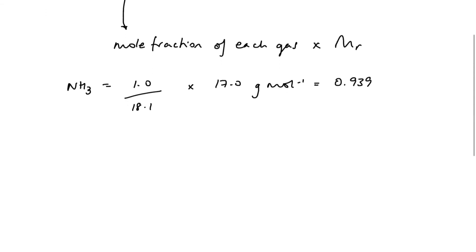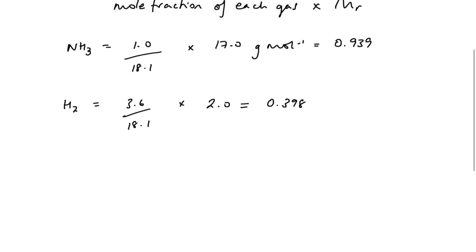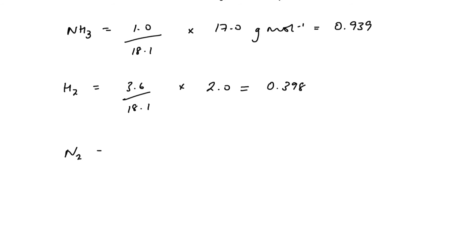We're going to repeat that for hydrogen and nitrogen. So for hydrogen, 3.6 over 18.1 times 2.0 grams per mole equals 0.398. And the mole fraction for nitrogen: 13.5 over 18.1 times 28.0, and that comes to 20.88.